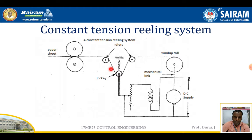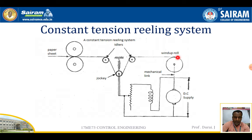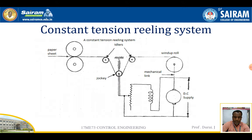When the paper's tension increases, the jockey moves upward, which changes the field current. Due to that change, the speed of the roller is reduced or increased according to the specific requirement. When the jockey moves upward, tension is increased; when the jockey moves downward, tension is decreased. According to that, the rotation of the roller is controlled.